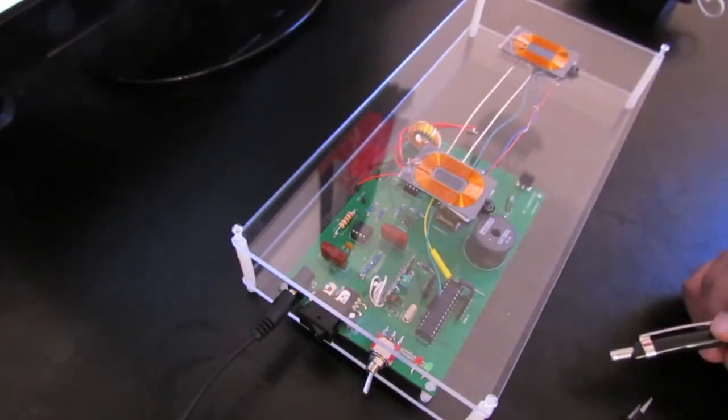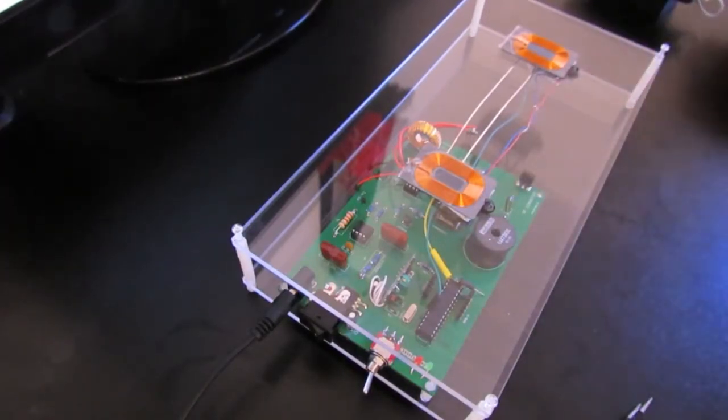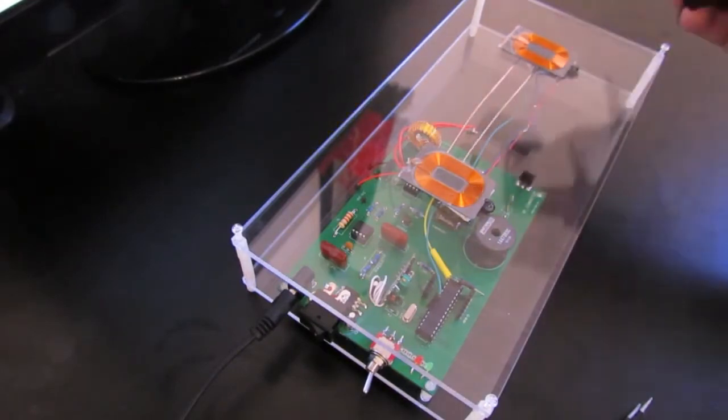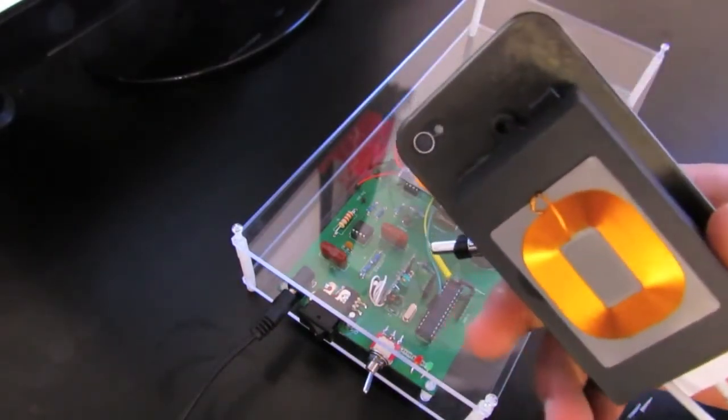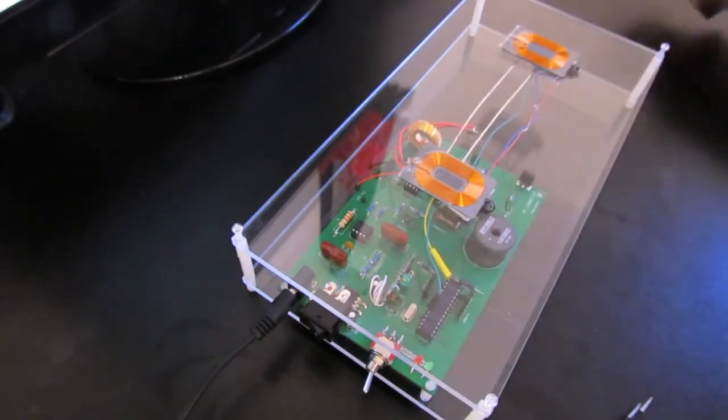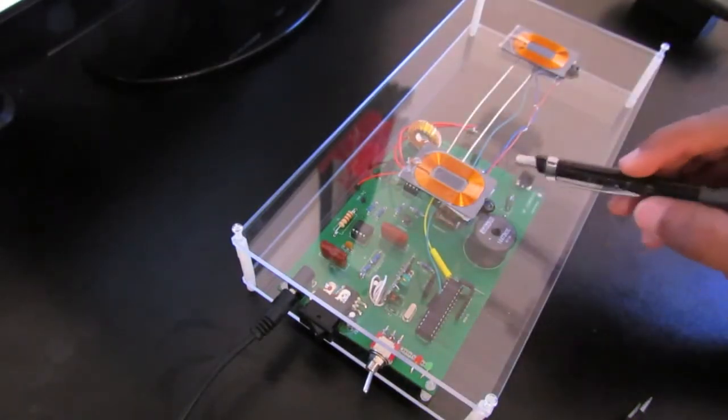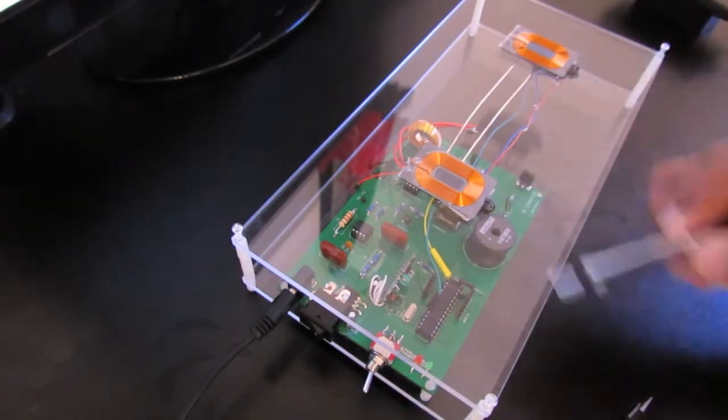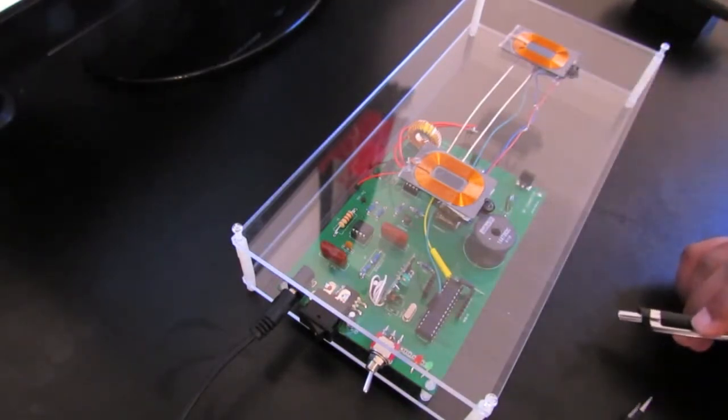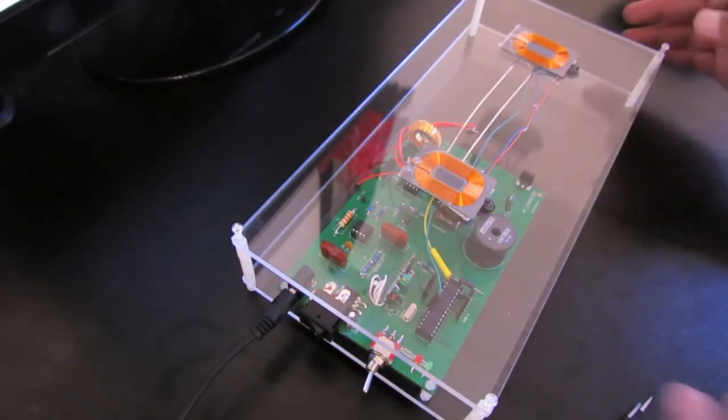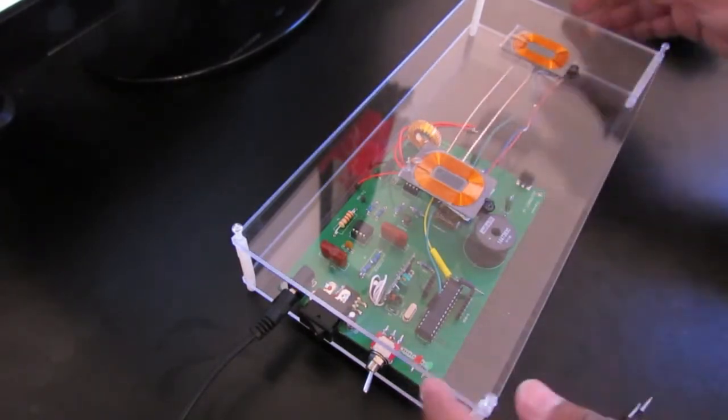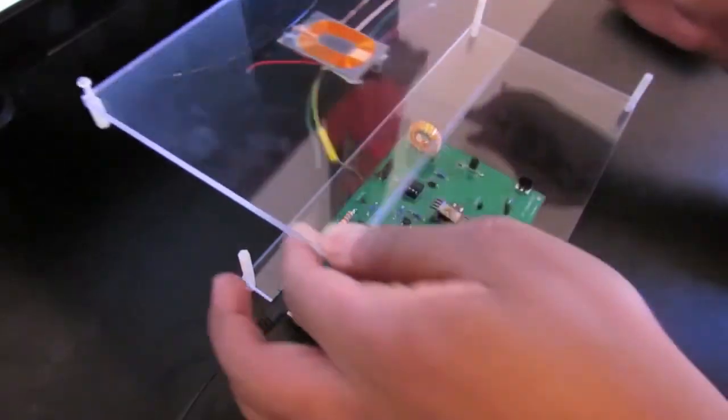These transmitter coils transmit power which can be picked up by the receiver coil connected to the device. There are object detection sensors near each transmitter coil to detect if there's any device above that coil. These transmitter coils are being driven by a Class E amplifier.